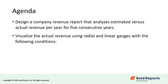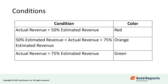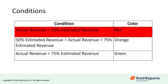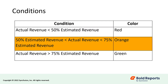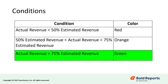In this video, we are going to design a company revenue report that analyzes estimated versus actual revenue per year for five consecutive years. We are going to visualize the actual revenue using radial and linear gauges with the following conditions: if the actual revenue is less than 50% of the estimated revenue, the gauge color should be red; if between 50% and 75%, orange; and if greater than 75%, green.